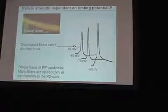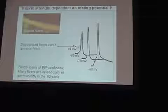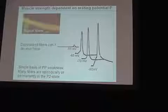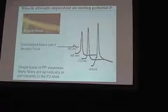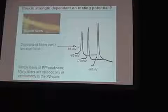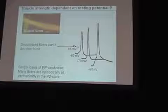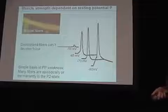This is the simple basis of periodic paralysis weakness. Many fibers are episodically or permanently in this P2 state. When they are episodically in this state, the person is normally strong — the muscle strength is normal. However, during an episode, the muscle fibers are weak. And if the muscle fibers are not able to recover from the P2 state, then the people are permanently weak.